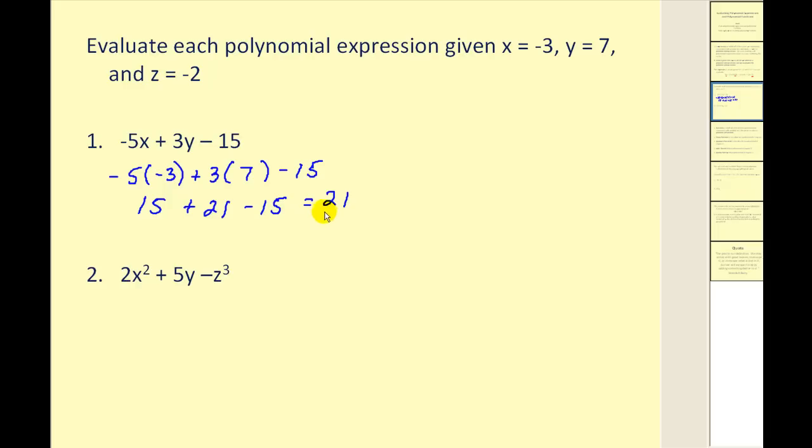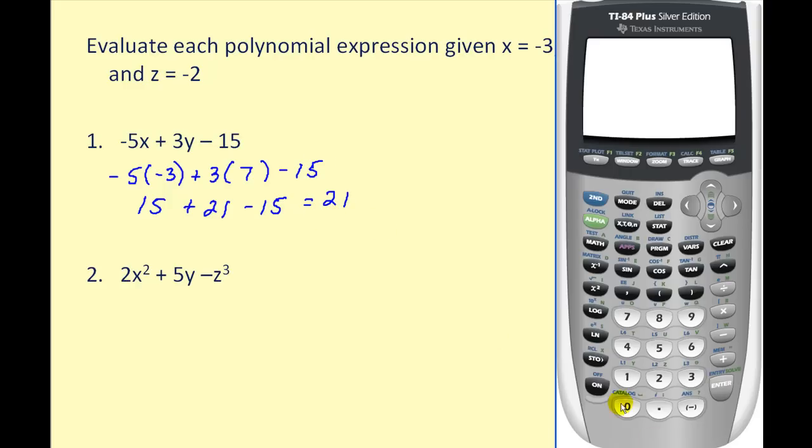Now we can easily check these with the use of the graphing calculator. The first thing we have to do is store the values into the variables. To store -3 in for x, we press negative 3, store, x, enter. Y is equal to 7, so we press 7, store, alpha 1, enter. And z equals -2, so we press negative 2, store, alpha 2, enter. Now we can just type in the given expression, -5x + 3y - 15 to verify our answer. Let's try another.